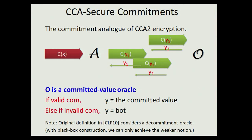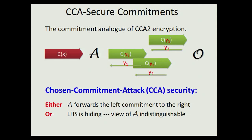With this oracle in mind, a commitment scheme is CC secure if in such a man-in-the-middle execution with the committed value oracle, one of two things happen: either the adversary forwards the left commitment to the oracle — in which case trivially he gets the committed value and we guarantee no security — or, as long as this does not happen, the left-hand side committed value must remain hidden. This is really exactly the twin brother of CCA2 encryption.